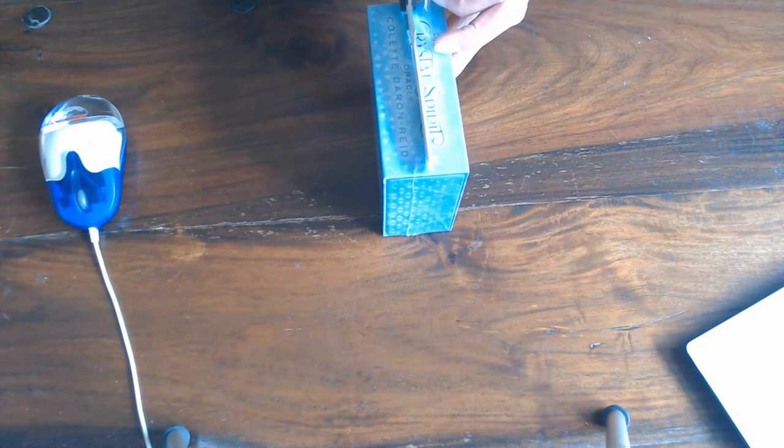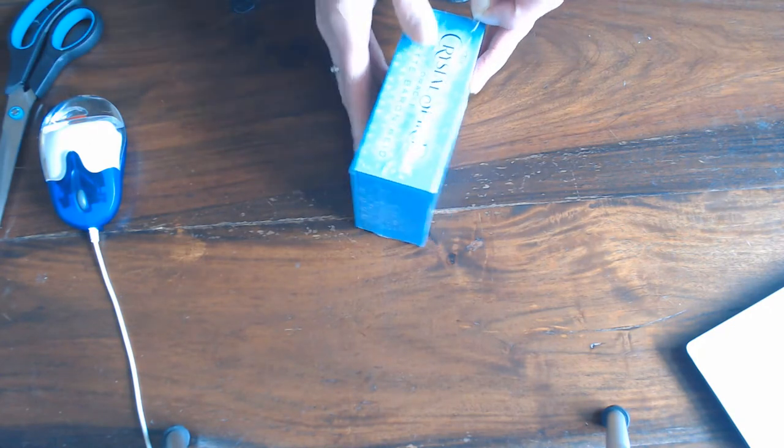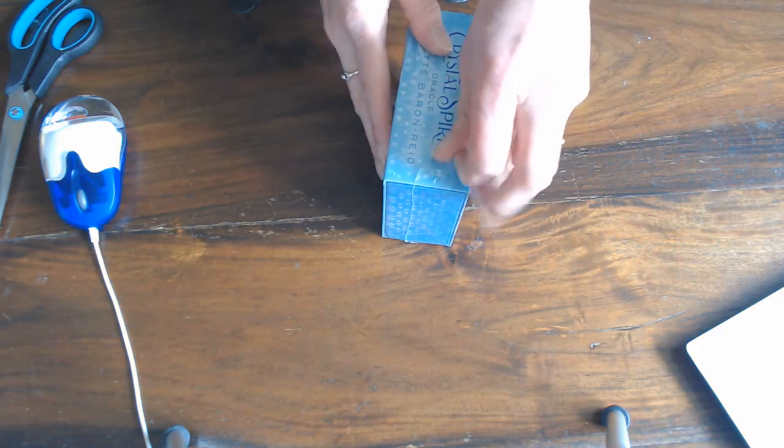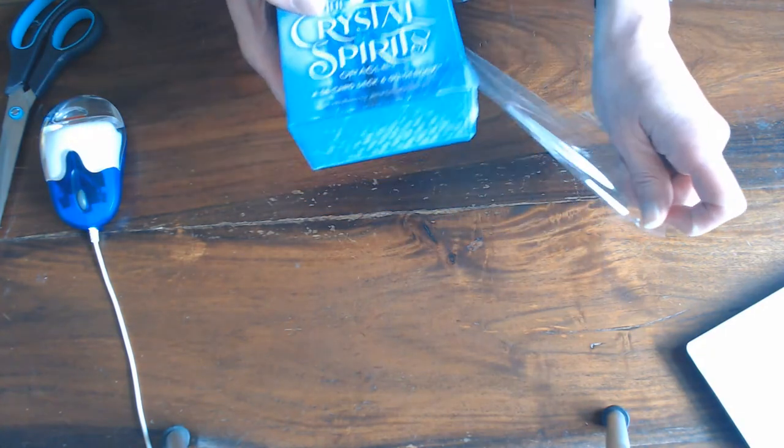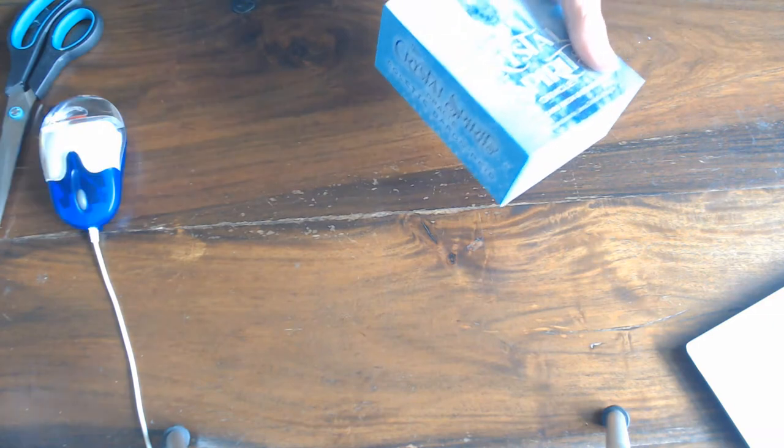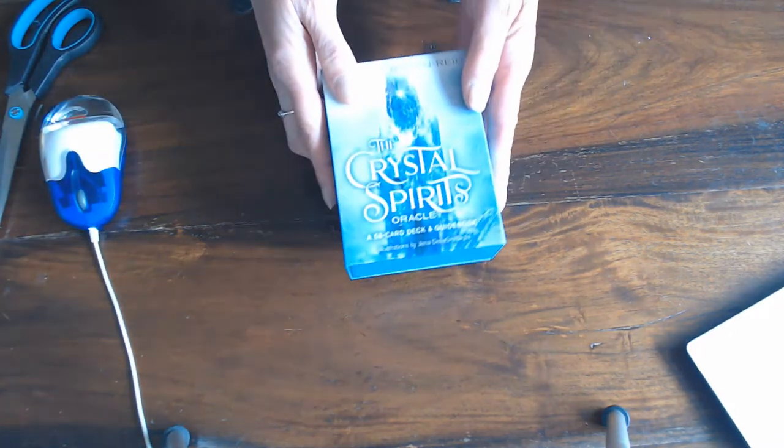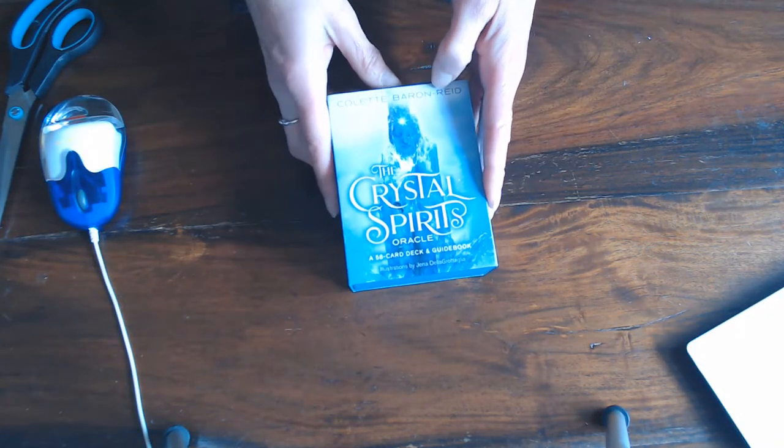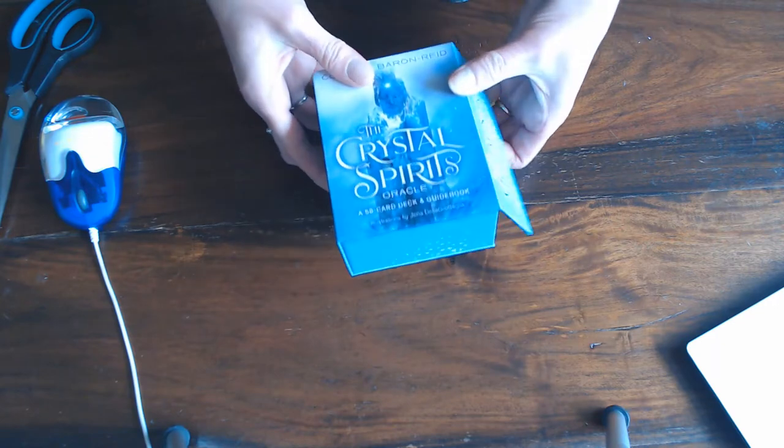Help give you food for thought and motivate you. It's great! It's Colette Baron-Reid, the Crystal Spirit Oracle. It's a beautiful box, one of my favorite colors at the moment - aquamarine.